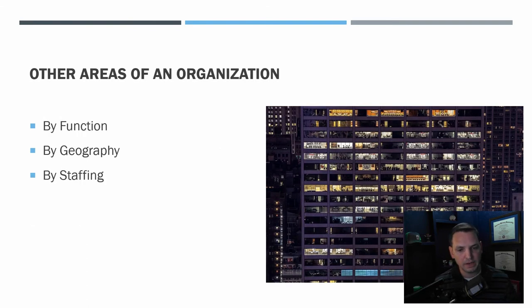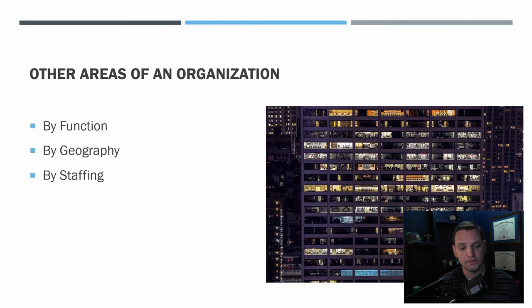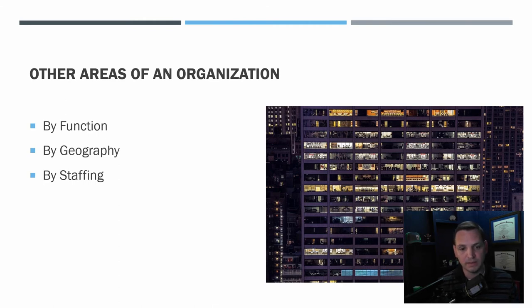Organizations can also be structured by function, geography, or staffing. You see this in large national or international companies. A function might be a sales team as an organization. Geography might mean a regional director over a region. Staffing might break it down into executive teams and marketing teams — another division of the hierarchy that rolls up.